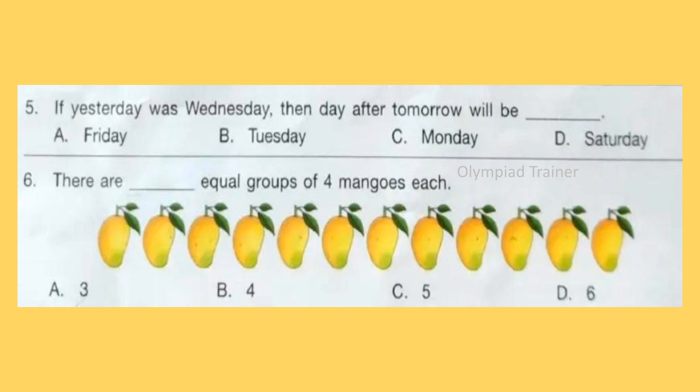Question 6: There are dash equal groups of 4 mangoes each. Count the number of mangoes. Answer is Option A, 3. 3 equal groups of 4 mangoes.